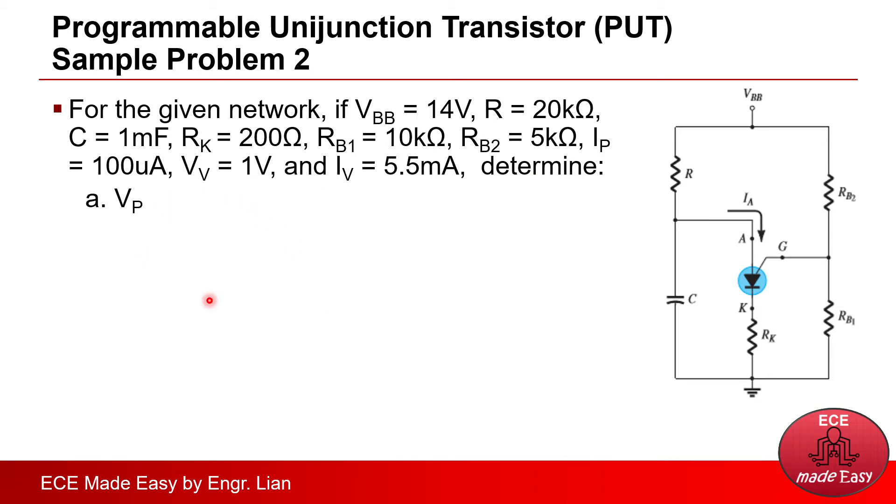Let's go first to VP. So to solve for VP, we'll again use the equivalent formula, which is eta times VBB plus VPN. However, for this sample, there was no given standoff ratio.